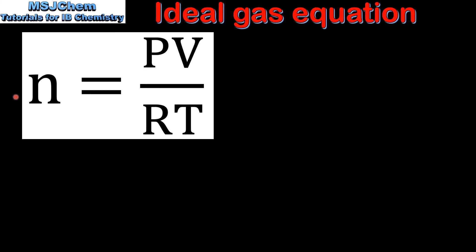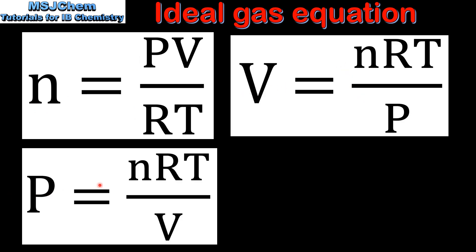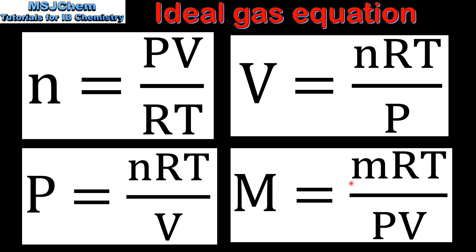The ideal gas equation can be rearranged to solve for n which is amount in moles which is PV over RT, volume which is nRT over P, pressure which is nRT over V, and molar mass which is mRT over PV, where m is mass in grams.